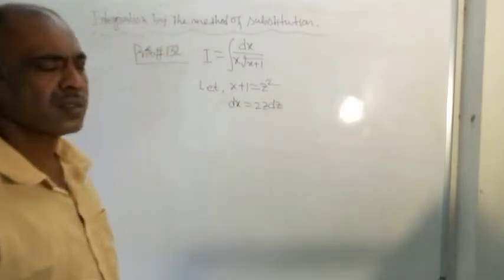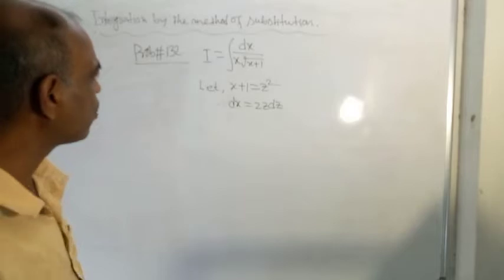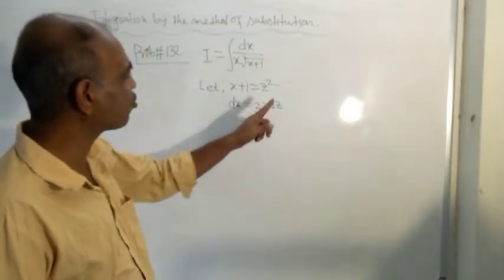For 1, the derivative will be 0. For x, it is dx. For z squared, it is 2z dz.